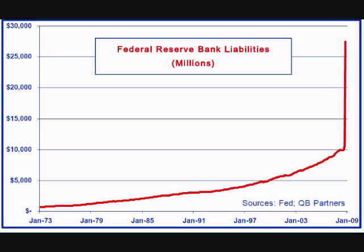If the country was in a recession, the Fed may want to lower reserves, which will increase the money supply to try to increase spending and reduce unemployment. If the economy was booming and inflation was a concern, the Fed may want to increase reserves, which will lower the money supply to try to reduce spending.